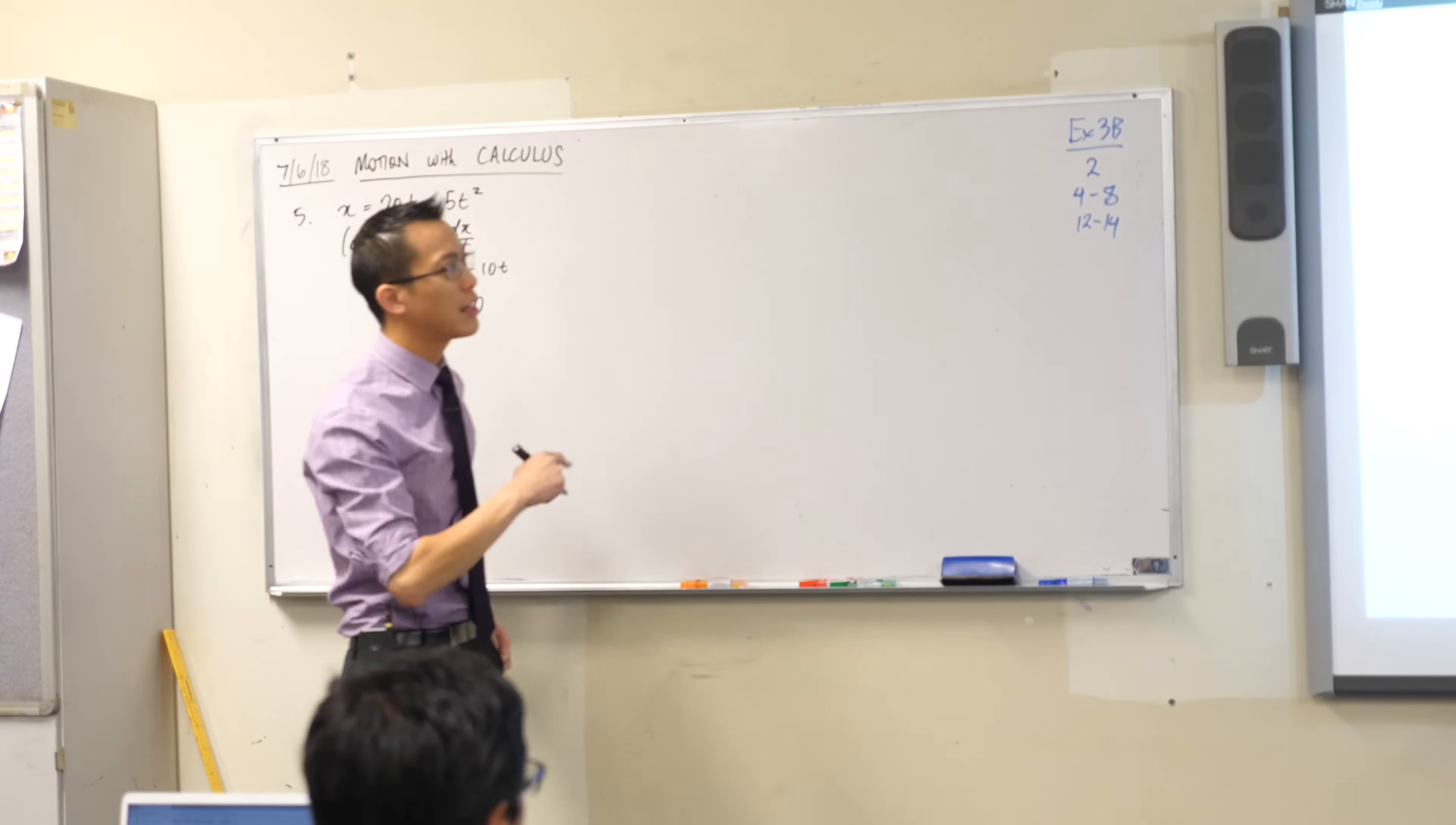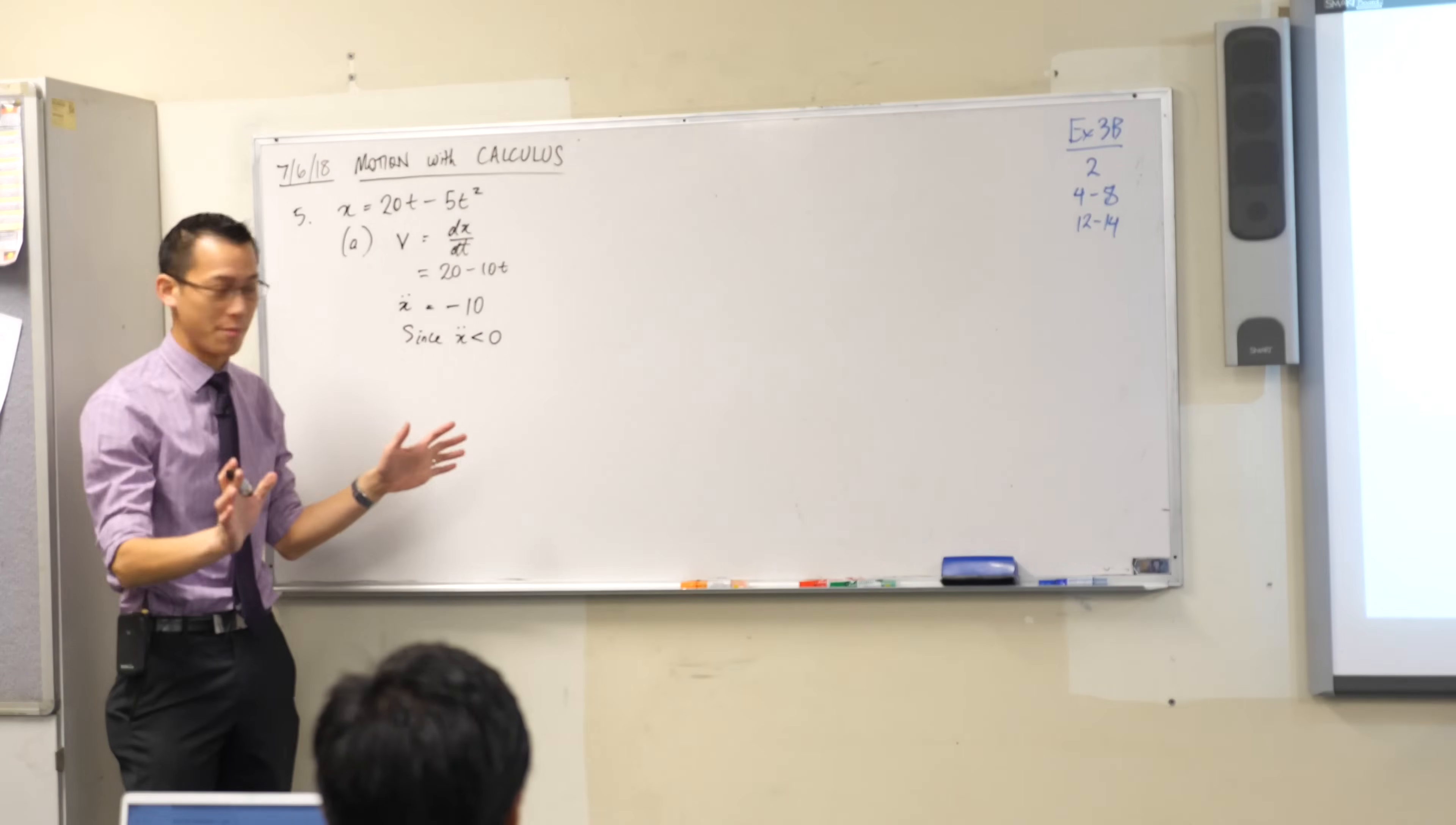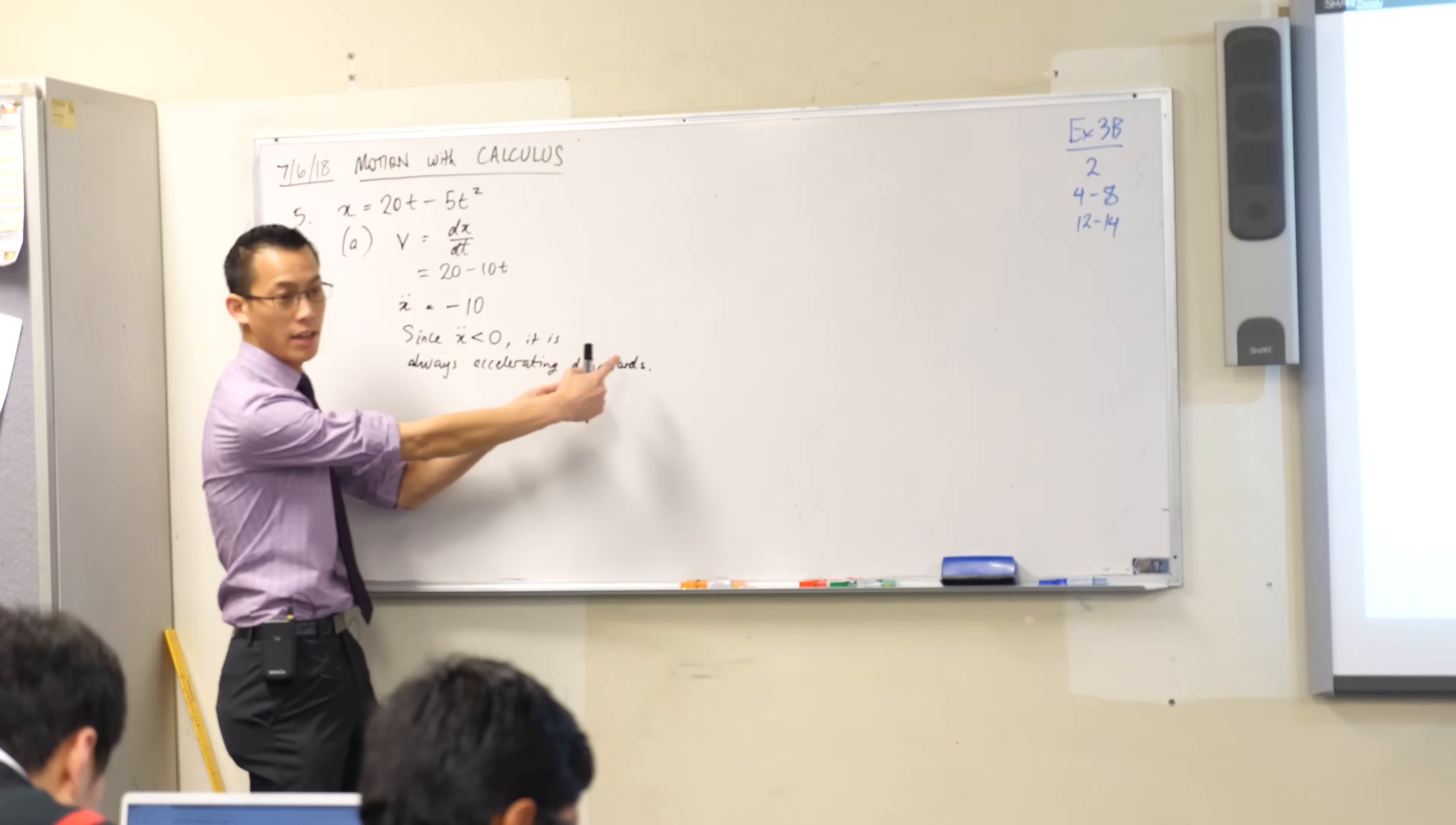It says show that the ball is always accelerating downwards. Accelerating downwards. How do I read that? Where do you get that from here? Yeah, it's the sign of this acceleration here, right? So I would say since x double dot is always less than zero. It's negative 10 all the time, right? It is always accelerating downwards and you can hear that language that I alluded to before. This is vector language because they say it's accelerating. It's velocity is changing, but then they also have to describe the direction in which it is changing. It is accelerating in that direction.